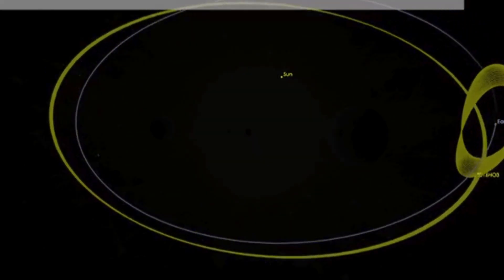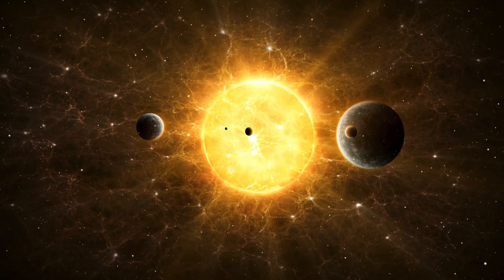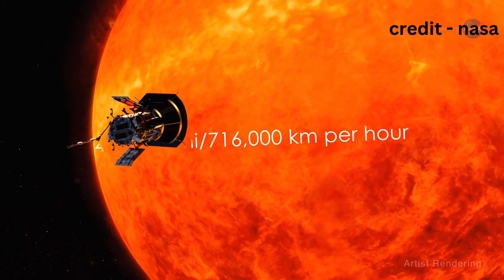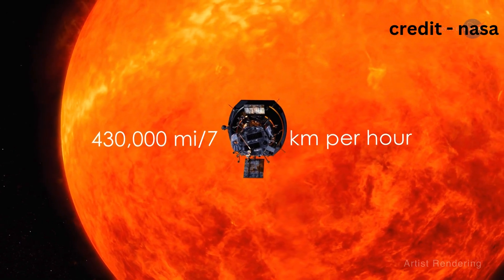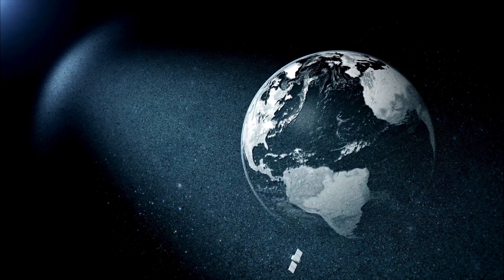December 24th, a moment etched in history. Parker skimmed just 6.1 million kilometers from the sun, traveling at a staggering speed of 62,000 kilometers per hour. To put that into perspective, it could circle the Earth 17 times in an hour.